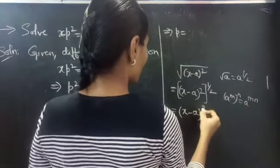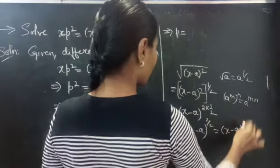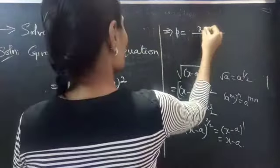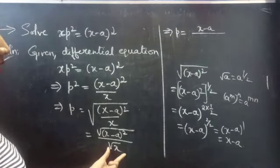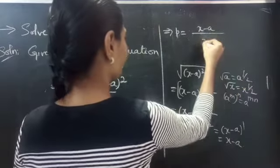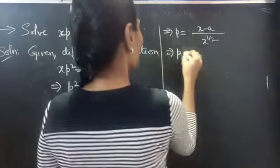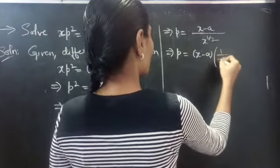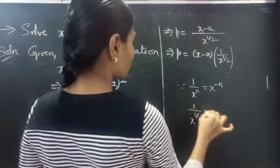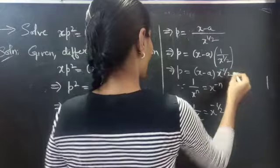Since a power m, whole to the power n, equals a power m into n. Then you can write this as x minus a to the power 2 into 1 by 2. 2 into 1 by 2 is 2 by 2, so you get x minus a to the power 2 by 2, which equals x minus a to the power 1, which is x minus a. So in the numerator you get x minus a. Here you have square root of x in the denominator, which you can write as x to the power 1 by 2. Then p equals (x minus a) into 1 by x power 1 by 2. Since 1 by x power n equals x power minus n, 1 by x power 1 by 2 equals x power minus 1 by 2. So p equals (x minus a) into x power minus 1 by 2.